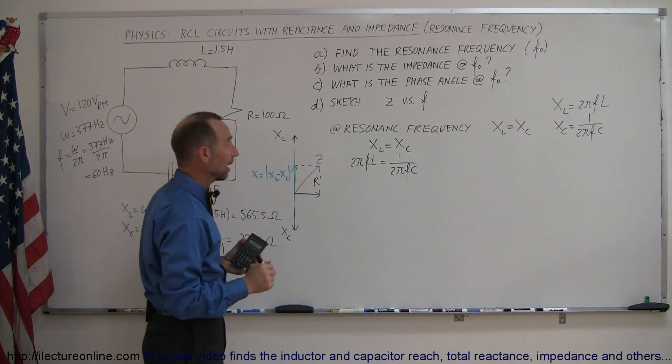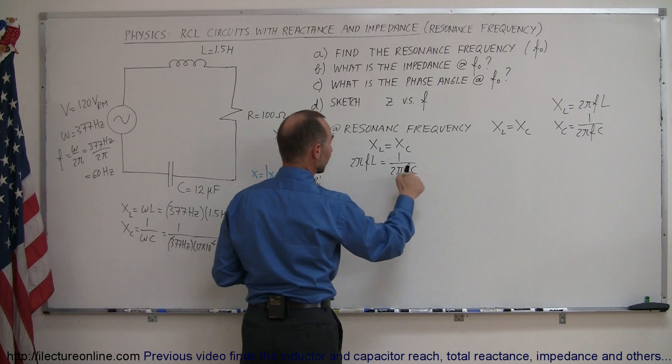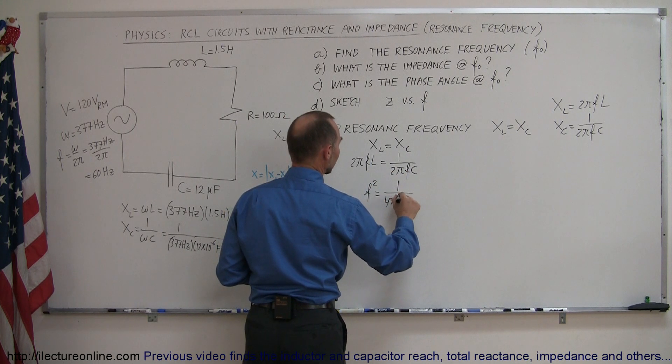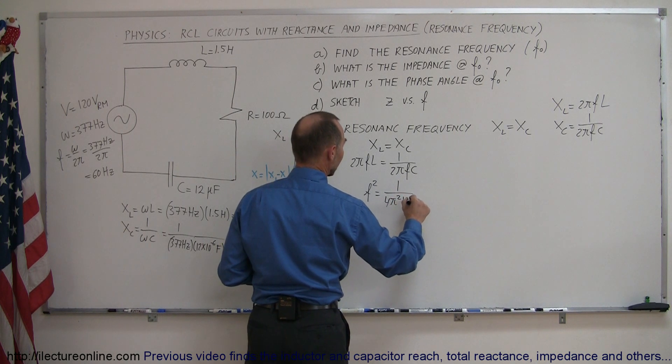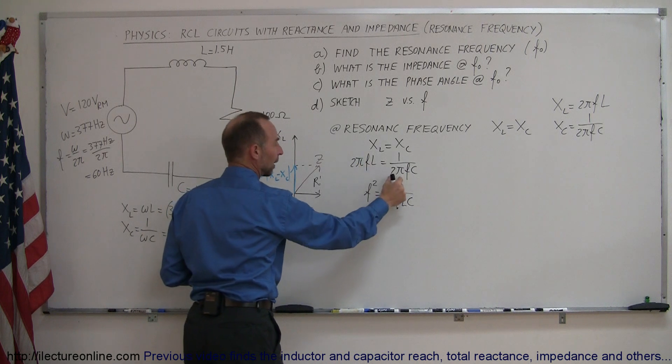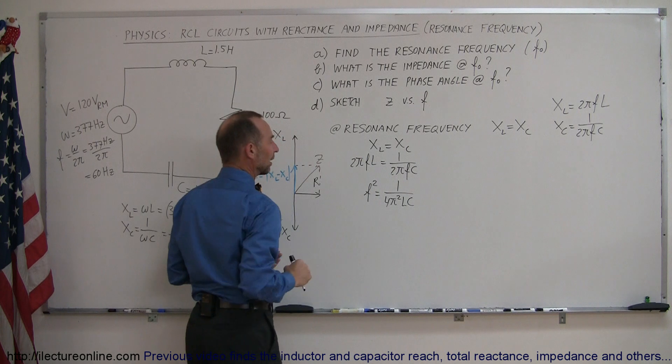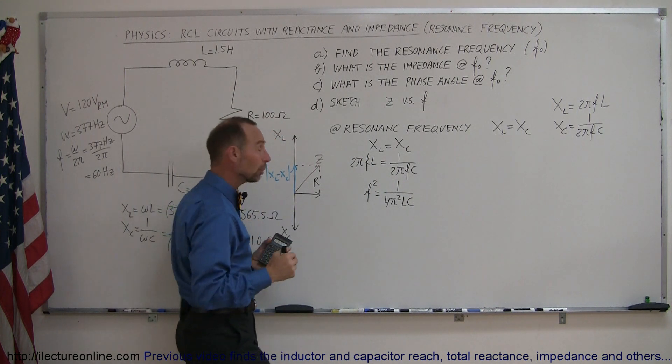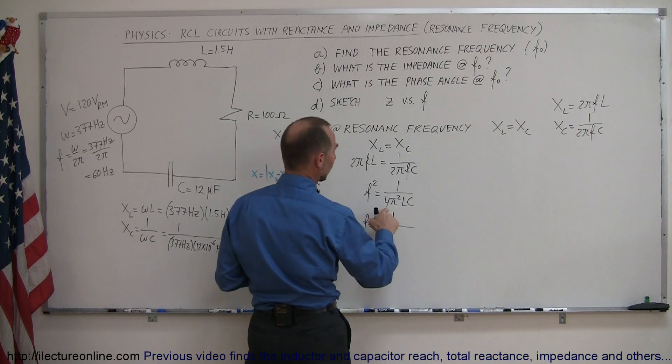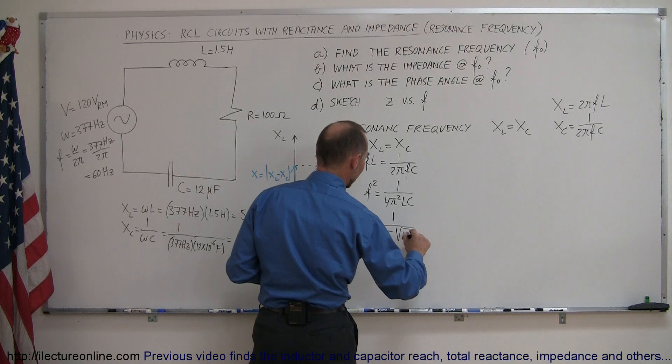Then solving that equation for F, we can put the F up here and the 2π down here and the L down here, so we can say that F squared is equal to 1 over 4π squared, and then we have L times C. So we multiply this 2π by this 2π, we get 4π squared. We put the L down here and we bring the F up here. Now taking the square root of both sides, we have F is equal to 1 over the square root of 4π squared is 2π, times the square root of L times C.